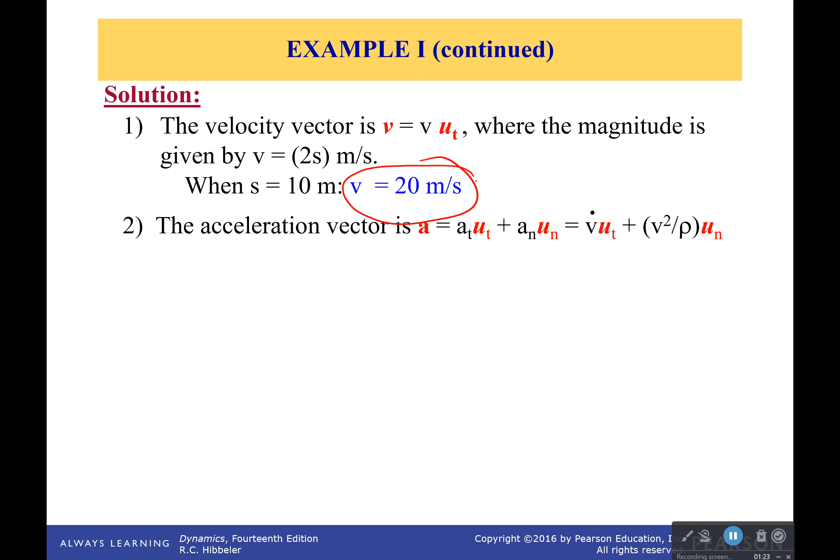Now the acceleration vector is going to be equal to the magnitude v squared over the radius, which we know, and also it's going to have this component where we're seeing how that changes with time. So v dot, that's where we're going to have an issue. But maybe there's some sort of derivative thing we can do to help figure that out.